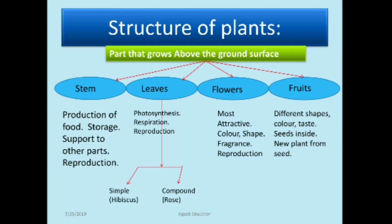The parts that grow above the ground are divided into four parts: stem, leaves, flower, and fruit. The function of the stem is production and storage of food, support to other parts like branches and leaves, and the stem is also used in reproduction.